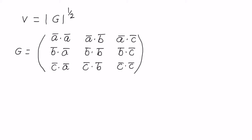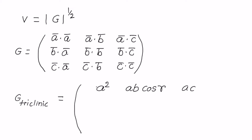This matrix is called the metric tensor. For the triclinic system we can write the matrix elements as: a·a = a², a·b = ab·cosγ, a·c = ac·cosβ, b·b = b², b·c = bc·cosα, and c·c = c². The matrix is symmetric so the remaining terms are equal to these.